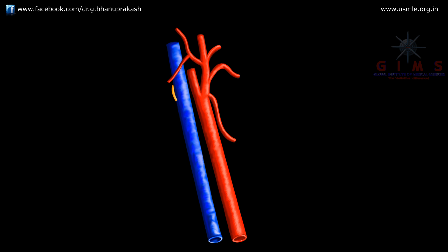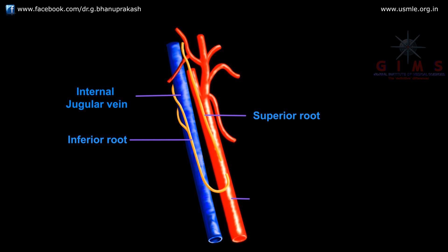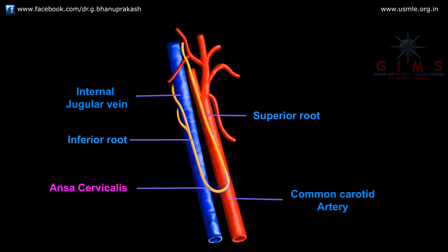This inferior root of the ansa cervicalis descends down, winds around the internal jugular vein, and then continues to join the superior root in front of the common carotid artery. So, the ansa cervicalis is the combination of the superior root and inferior root — this nerve loop is called the ansa cervicalis.